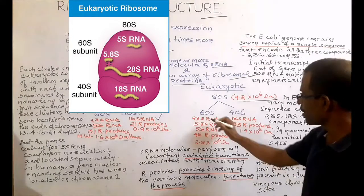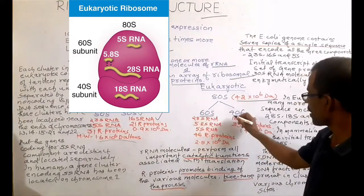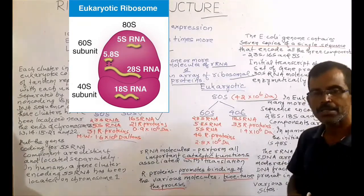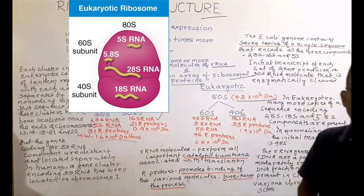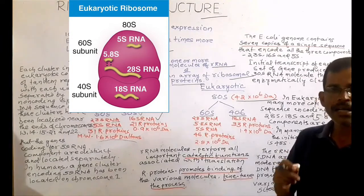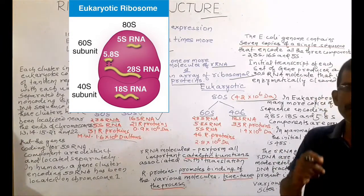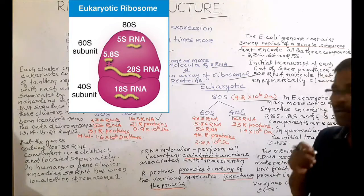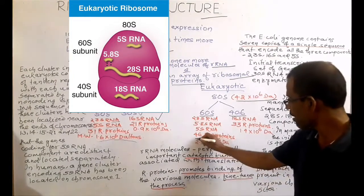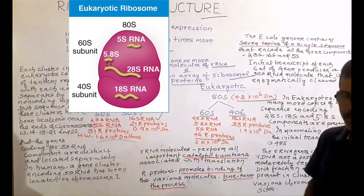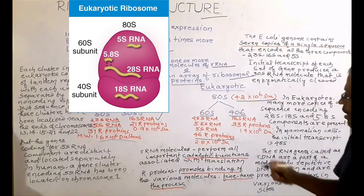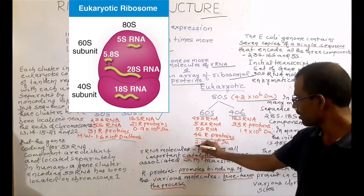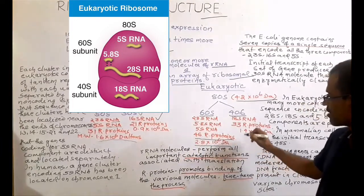The large subunit is 60S and the small subunit is 40S. The 60S subunit consists of a molecule of 28S RNA, 5.8S RNA, 5S RNA, and above 46 ribosomal proteins. The approximate molecular weight of 60S subunit is 2.8 × 10^6 Dalton.